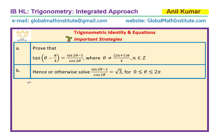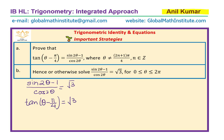Part B requires us to find the solution of the equation (sin 2θ - 1) over cos 2θ equals √3. From Part A we know that the left-hand side is actually equal to tan(θ - π/4), so that should be equal to √3. That is a very simple equation to solve.